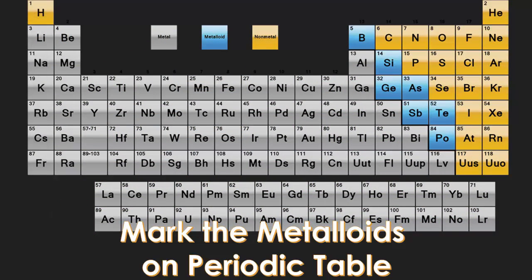Looking at your periodic table, you should mark down the different metalloids: boron, silicon, germanium, arsenic, antimony, tellurium, and polonium. Maybe put a star in the bottom right-hand corner — something so you remember that those are the metalloids. The metalloids always land on that heavy stair step that you see on the periodic table, which is why it's bolded — it's already done for you.